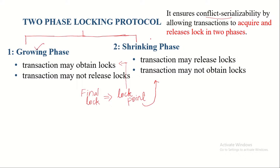Those two phases are known as the growing phase and the shrinking phase. In the growing phase, transactions may obtain all required locks, and they are not permitted to release any locks. When the transaction acquires its final lock, that point is known as the lock point. From the lock point onwards, the transaction can transition from the growing phase into the shrinking phase.